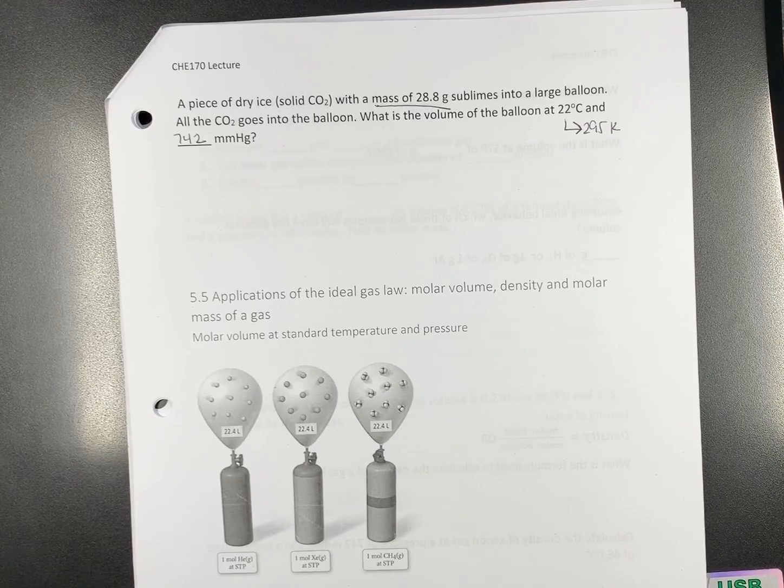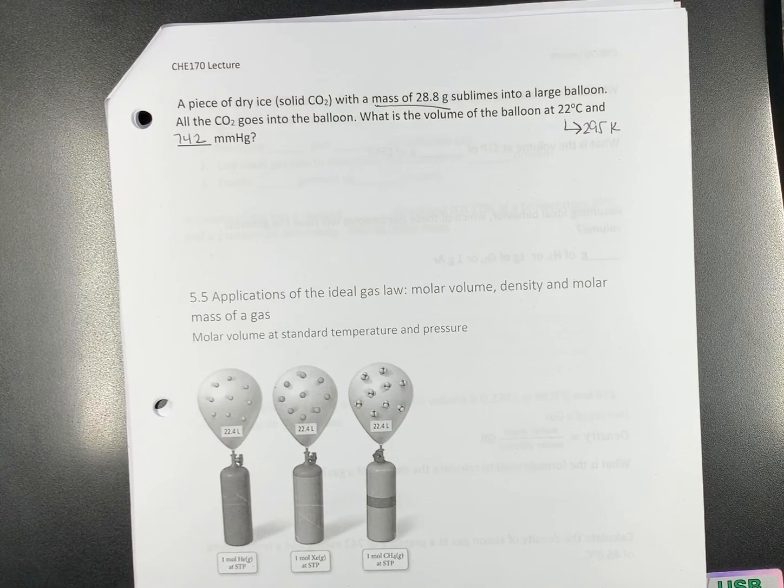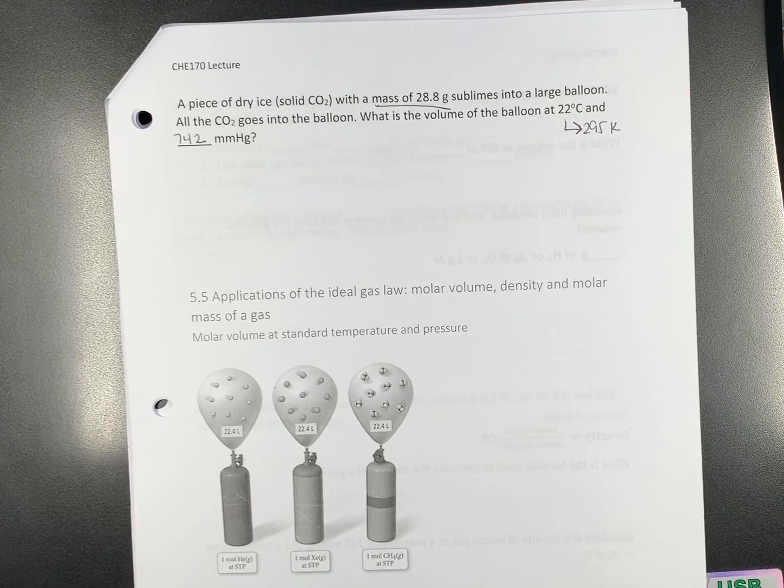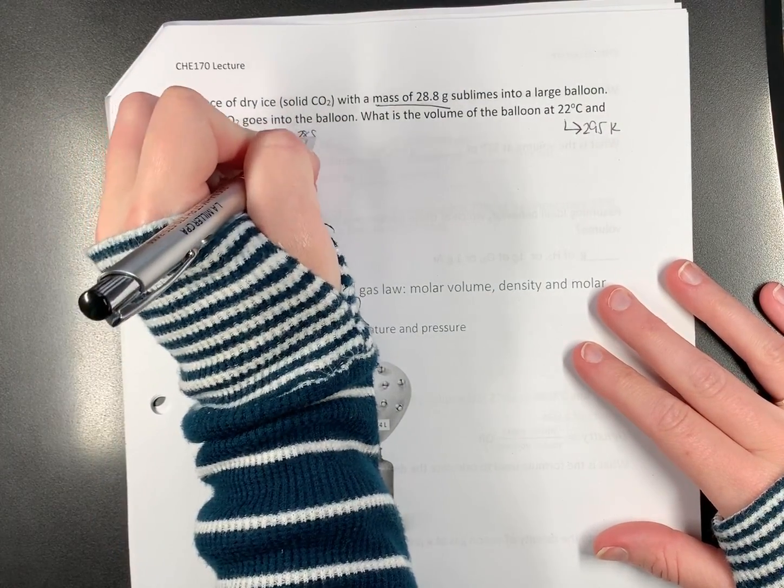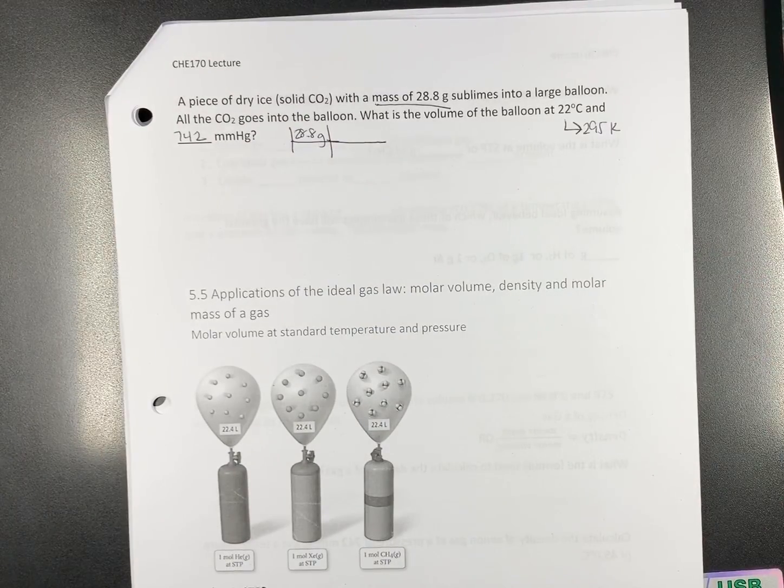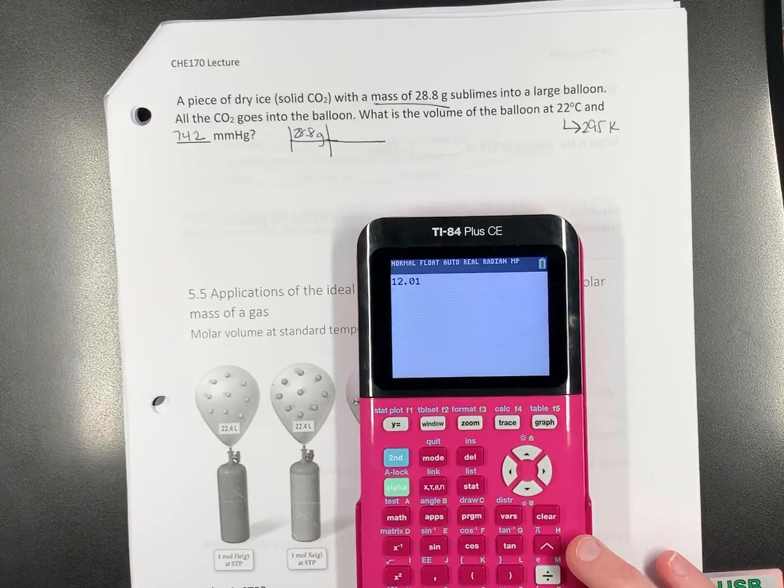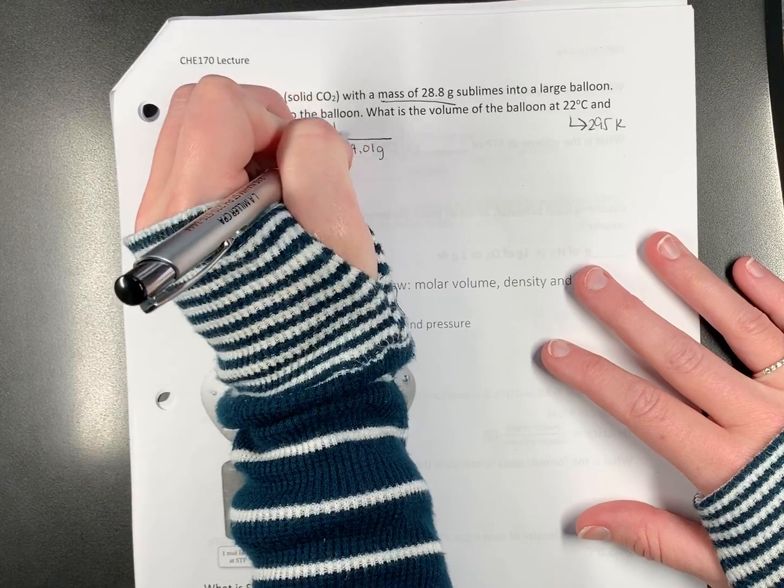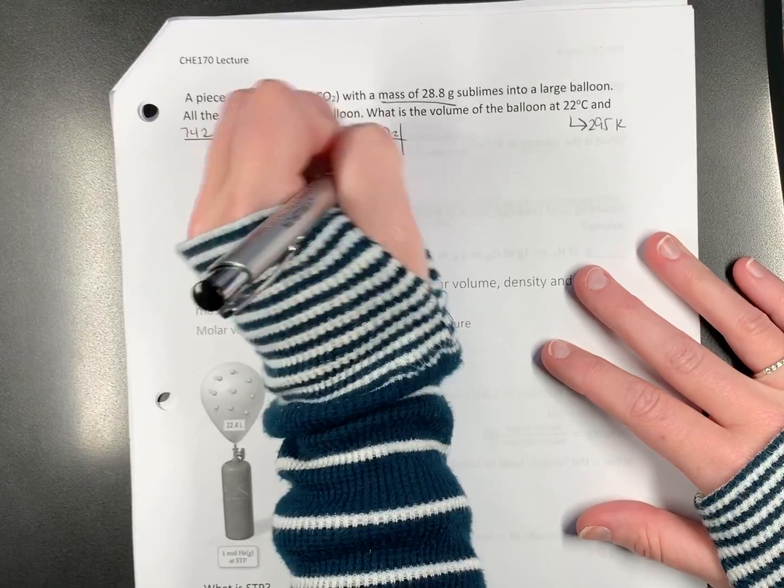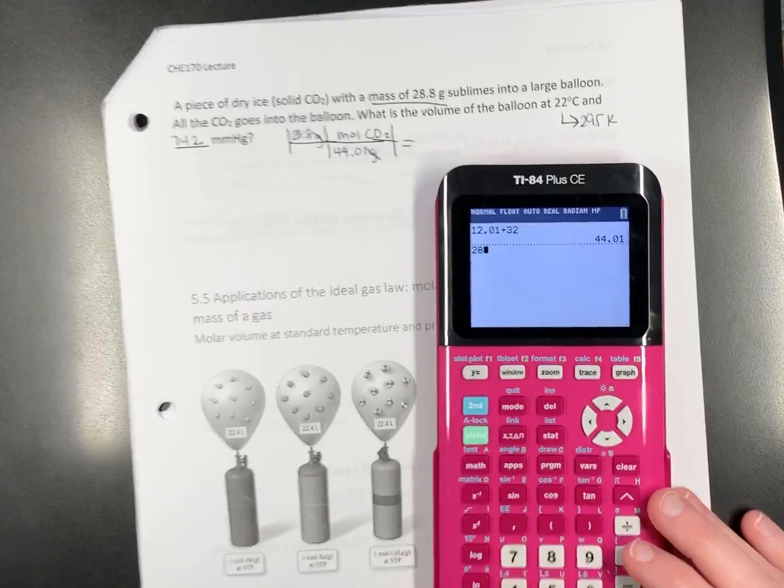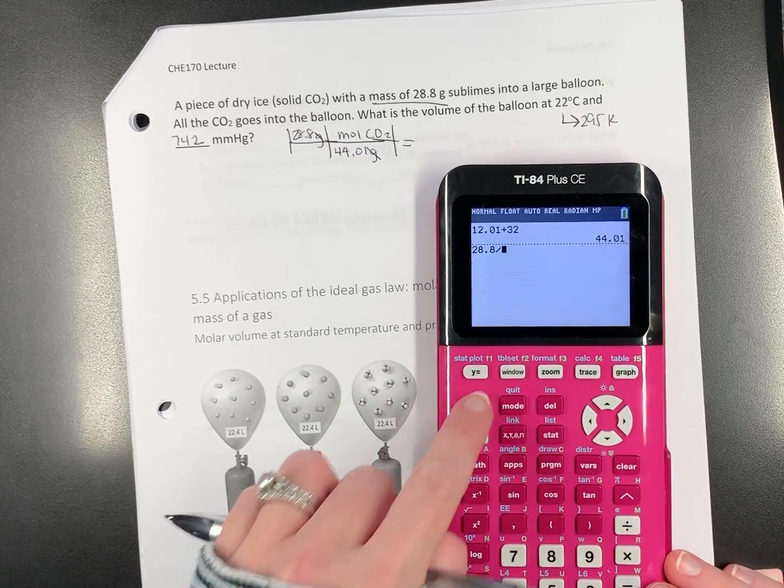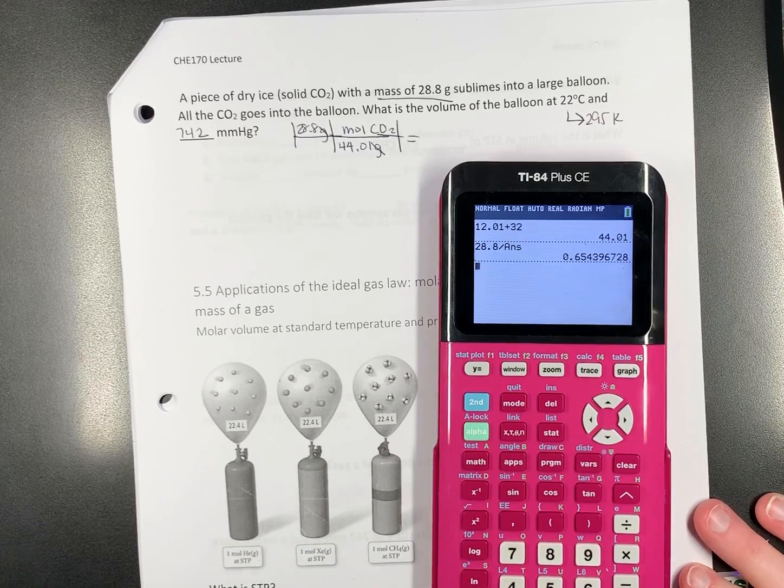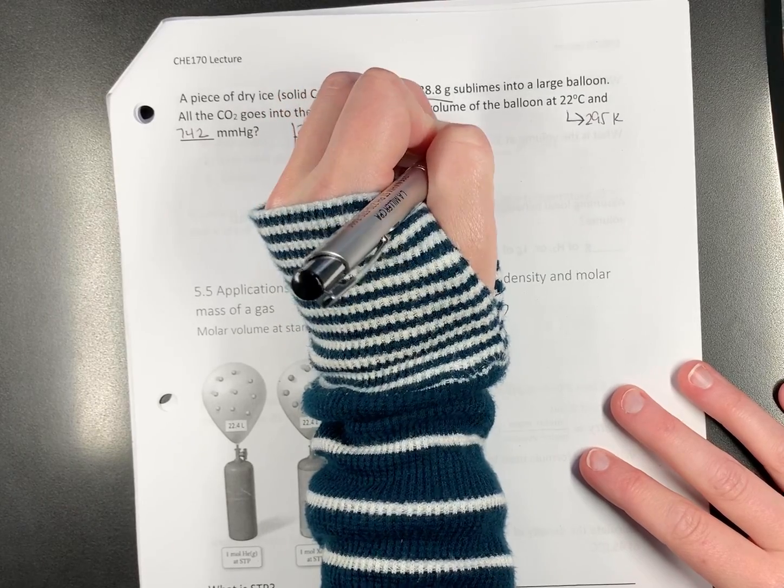What else do we need to convert? We need to convert grams. What do we need to get into? Moles. How do we do that? Molar mass. Periodic table. So, let's go with 28.8 grams. And molar mass of carbon dioxide is going to be 12.01 plus 32. 44 or 44.01, depending on how you round, grams per mole of CO2. Let's calculate that out. 0.654 moles.